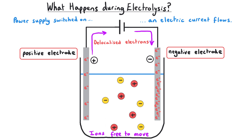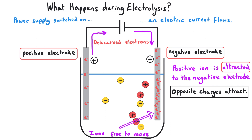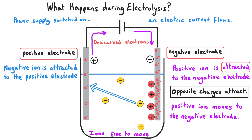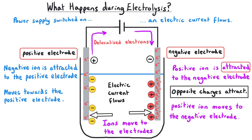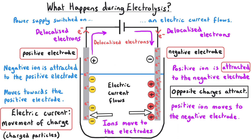The electrolyte is made up of an ionic compound with positive and negative ions that are free to move. The positive ion is attracted towards the negative electrode, moving through the electrolyte towards it, while the negative ion is attracted towards and moves towards the positive electrode. This movement of ions constitutes an electric current flowing through the electrolyte, since electric current is the flow of charged particles — in the electrodes and wires these are delocalized electrons, but in the electrolyte they are the ions. That is the core idea of electrolysis.